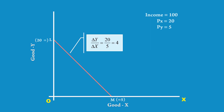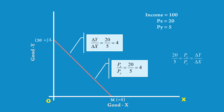We shall look at the same phenomenon from a different angle. What is the price of 5 units of good X in terms of good Y? It is 20 units — this is the same as delta Y. What is the price of 20 units of good Y in terms of good X? It is 5 units — this is delta X. Delta Y by delta X can also be understood as PX by PY, which is nothing but the price ratio. The slope of the price line is the same throughout its length, as it is a linear curve, hence uniform slope.